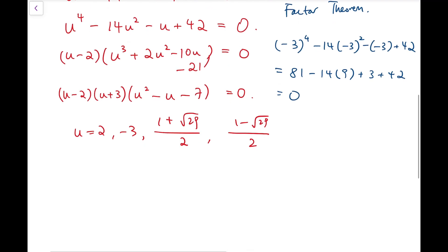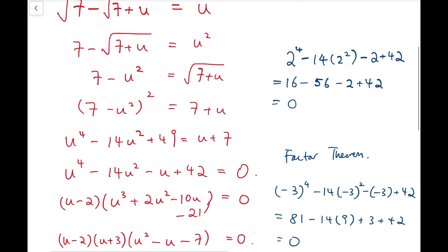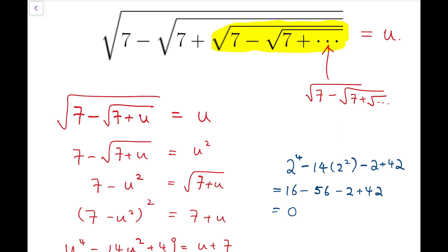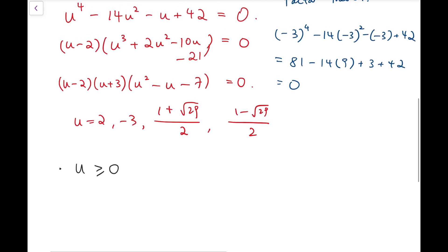Firstly, we need u to be larger than 0. Or, at least, not negative. Because, as what we've defined, u is the square root under the radical sign of some positive numbers. So, by definition of the radical sign, we cannot have u to be a negative number. So, that means, I have to reject minus 3, and 1 minus root 29 over 2. That means, we've eliminated two possibilities, and so, we have u equals either 2, or 1 plus root 29 over 2.